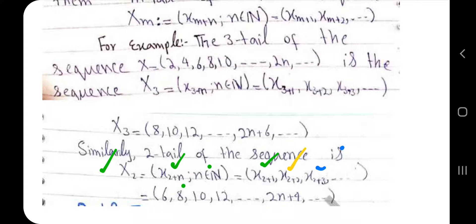Now let's verify the 2-tail. The first term of the 2-tail is the third term of the original sequence, x_3, which is 6. The second term of the 2-tail is the fourth term of the original sequence, x_4, which is 8. And the next term will be x_5, which is 10, and so on continuing in this manner.